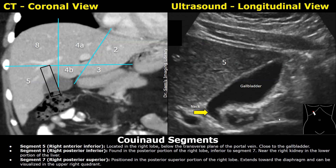When you locate the gallbladder in longitudinal view and get this type of image, just remember the segment that is anterior to the gallbladder will be segment 5. This is the gallbladder in the CT image in coronal plane. You can see segment 5 next to the gallbladder — segment 5 is the anterior inferior part of the right lobe.